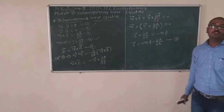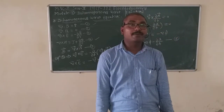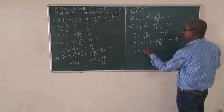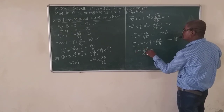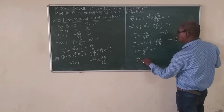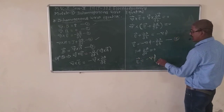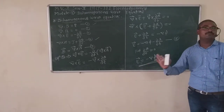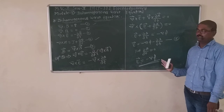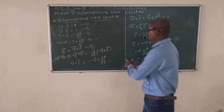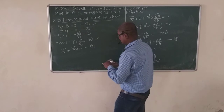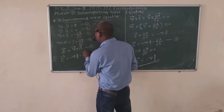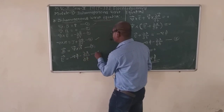This is equation number 6: E-bar equals minus del phi minus dA/dt. If we put dA/dt equal to zero, then equation 6 becomes E-bar equals minus del phi, and this is only for the electrostatic scalar potential. By using equations 5 and 6, equation 6 is E-bar equals minus del phi minus dA/dt.